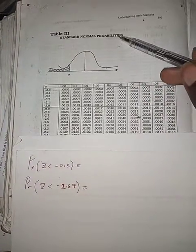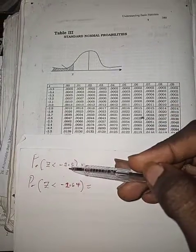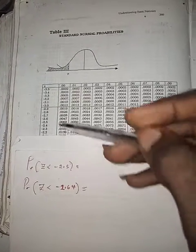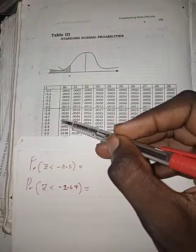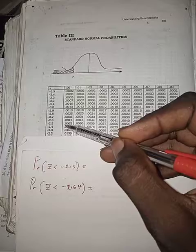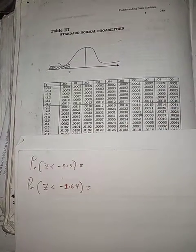This is the standard normal distribution table. If you're trying to find the value for the probability of z-score minus 2.5, you usually check minus 2.5 under 0, and that gives us 0.0062. So without making use of the table, this calculator will work based on that.